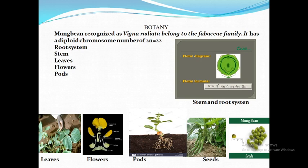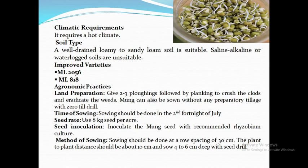Climatic Requirements: Mung bean grows in a wide range of climatic conditions. A warm, humid climate with temperature ranging from 25°C to 35°C with 400 to 550 mm rainfall, well distributed during the growing period of 60 to 90 days, is suitable for mung bean cultivation.